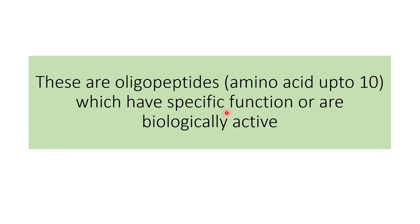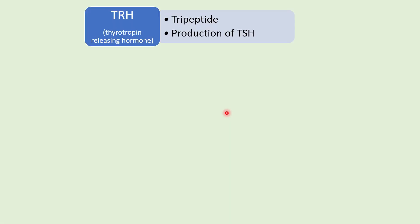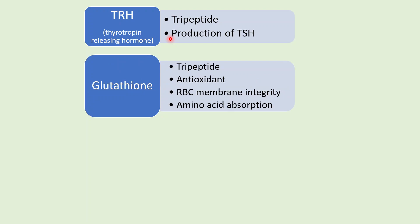The first example of a biologically important peptide is TRH, or thyrotropin releasing hormone. It is a hormone released by the hypothalamus and is a tripeptide made up of three amino acids. The function of TRH is to stimulate the production of thyroid stimulating hormone by the pituitary gland.